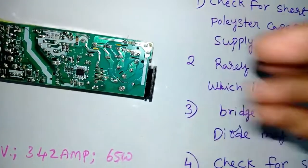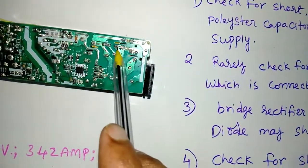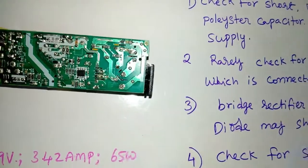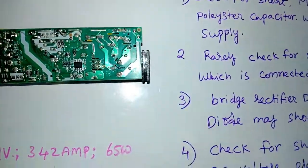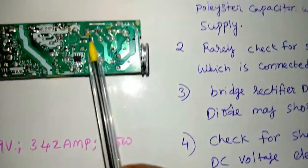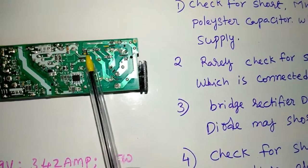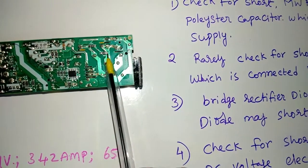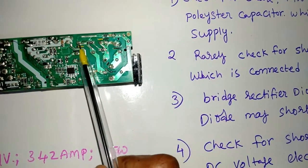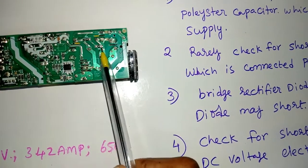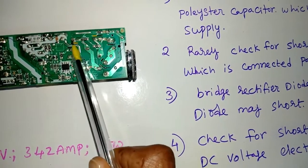This is the AC supply connected. Second, we have to check the serially connected load balance resistor. It is very rarely short.